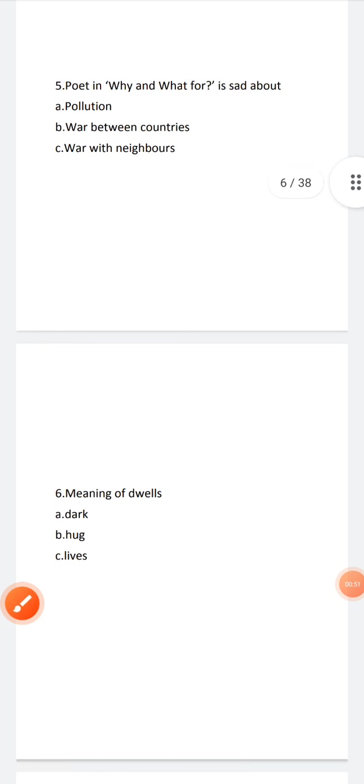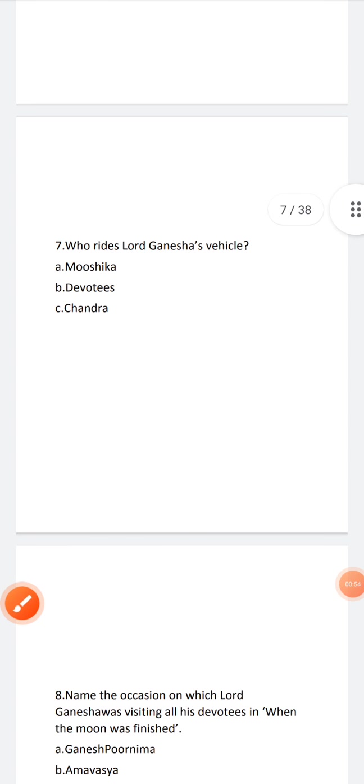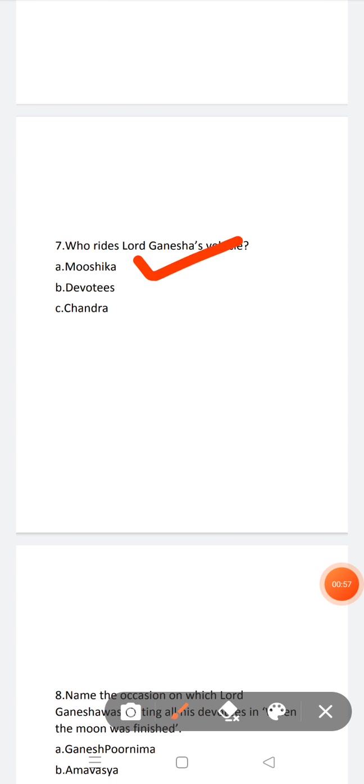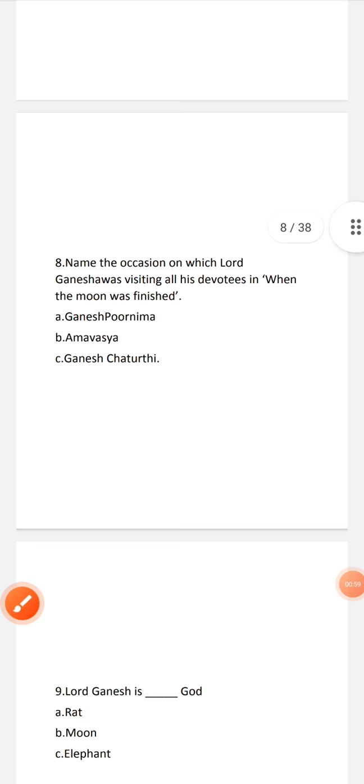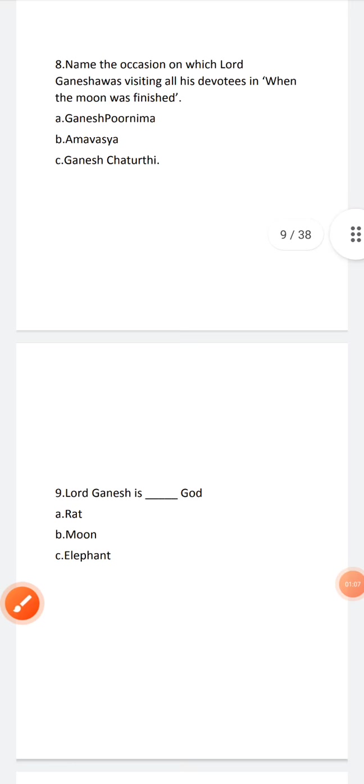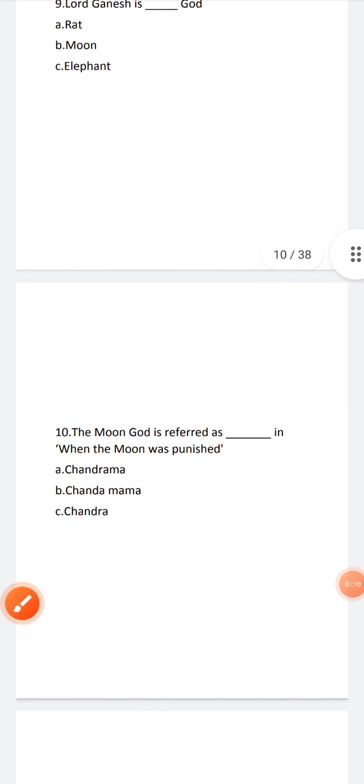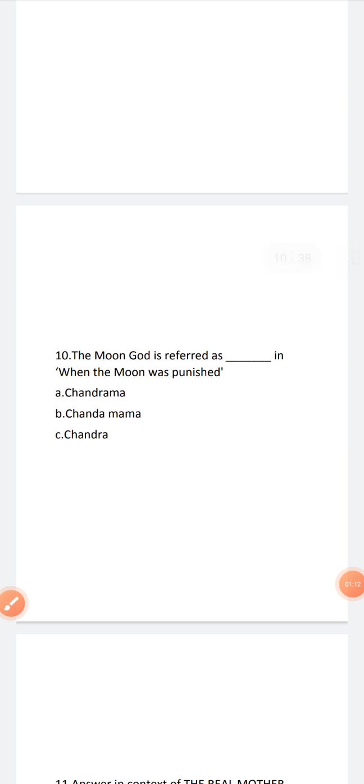Meaning of dwells is lives. Next, who rides Lord Ganesha's vehicle Mushik? Name the occasion on which Lord Ganesha was visiting all his devotees. In when the moon was punished, Ganesh Chaturthi, Lord Ganesh is elephant god.